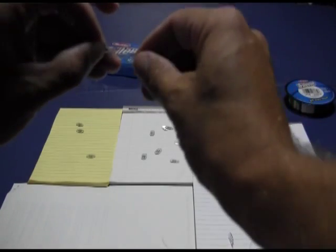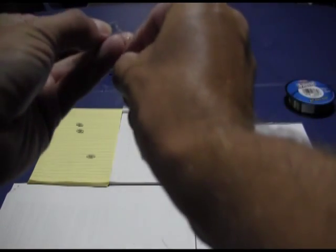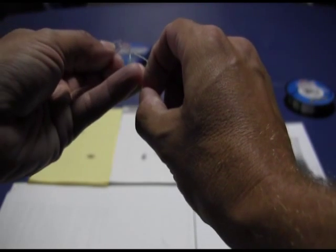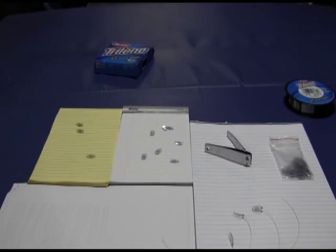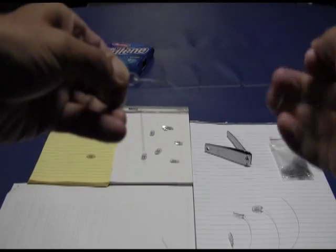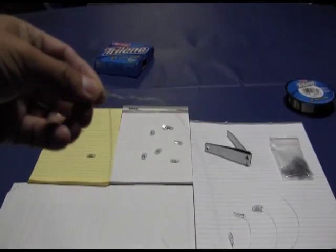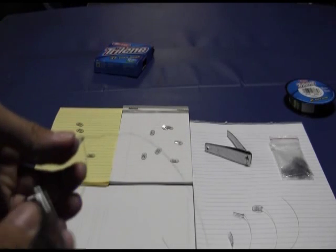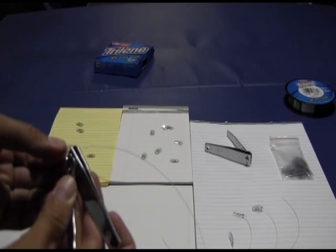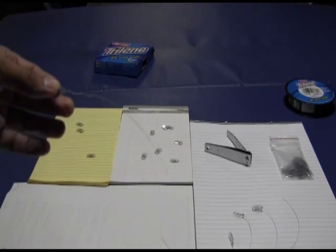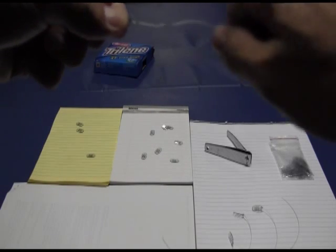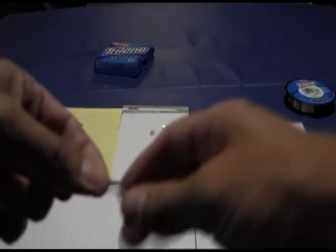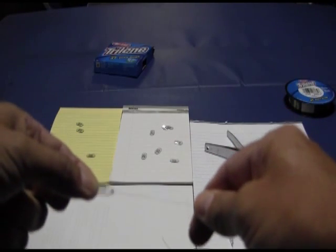And then this loop that you've now created by doing that, you're going to pass the working end back through that. Snug it up a little bit, then lubricate, and then tighten. If you don't lubricate these knots with spit or with water, then the line will probably weaken itself when you try and tighten it down dry. So that is the improved clinch knot.